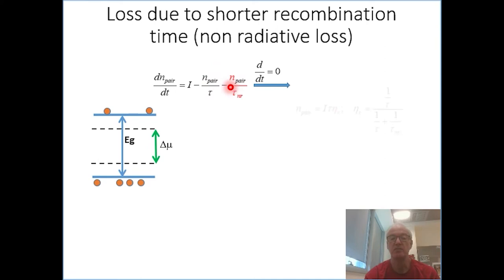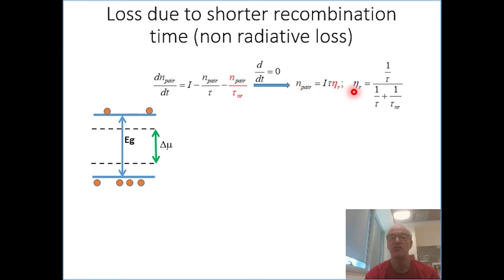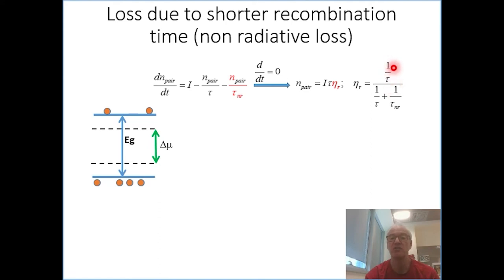So what we do is we simply make a change of terms: we replace tau by tau times eta, and we define eta through this term, which mathematically holds. But in practice you can also see that what it means is the radiative quantum efficiency, because this is the radiative rate and this is the non-radiative rate.